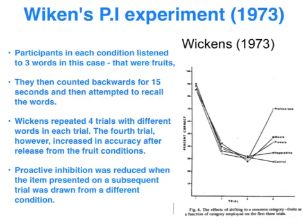Wickens conducted a number of interference experiments. Focusing on his 1973 experiment, he had five groups of participants and read out three fruits to each group. They then counted backwards for 15 seconds to eliminate rehearsal, and then recalled as many words as they could. Not difficult for the first trial. He then repeated this with three new fruits for a second trial — again counting backwards then recalling — and then a third trial.